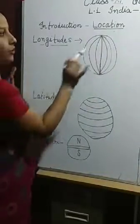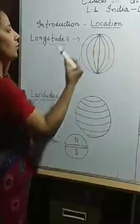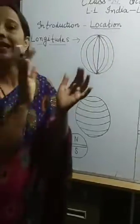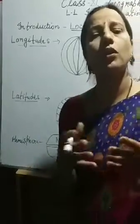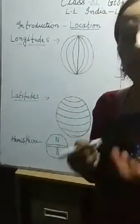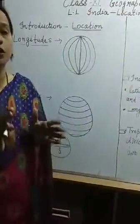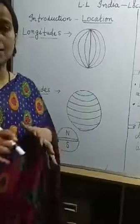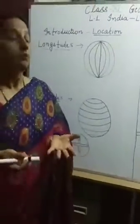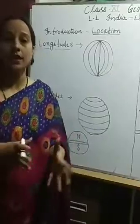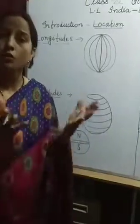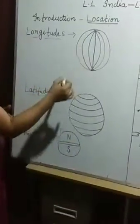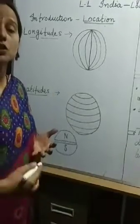In geography, it is very important to understand the meaning of location. You cannot see any lines on the actual earth — on the globe you have seen in every social science class, teachers tell you about latitudes and longitudes. Have you seen these lines anywhere on the earth? No, because these lines are imaginary lines. Geographers draw them on the globe so that with the help of these lines we can get proper knowledge about location.